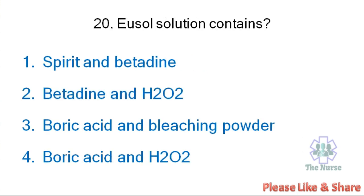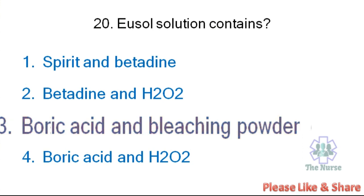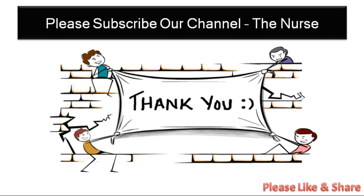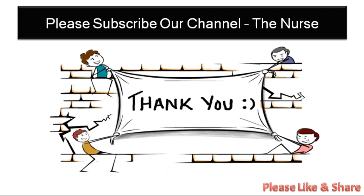Next question. Useful solution contains: Spirit and Betadine, Betadine and hydrogen peroxide, Boric acid and bleaching powder, or Boric acid and hydrogen peroxide. The correct answer is boric acid and bleaching powder. The question ends here. Thank you for watching this video. Please like and share this video, and don't forget to subscribe to our channel. Thank you.